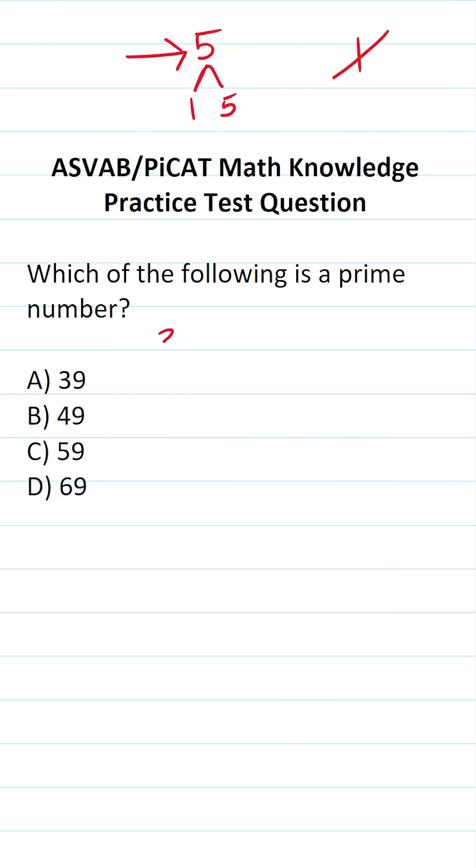Let's apply that with 39 here. 39 is divisible by 3. 3 divided by 3 is 1, 9 divided by 3 is 13. Since 39 is divisible by something other than 1 and itself, it can't be prime.